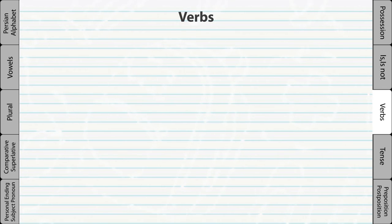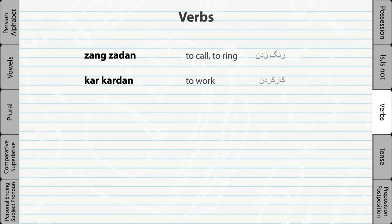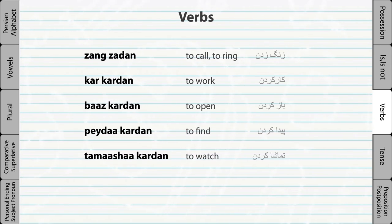Compound verbs. There are many compound verbs in Persian language. Compound verbs are made from a noun plus a verb. For example, the verb 'to ring' is 'Zang zadan.' Zang means 'bell' and Zadan means 'to hit,' so 'to hit the bell' means 'to ring.' Another example: 'Kar kardan' — Kar means 'work' and Kardan means 'to do,' so 'to do work' means 'to work.' The most common way to create a compound verb is a noun plus Kardan. When conjugating compound verbs, remember to change only the second part of the verb; the first part doesn't change.